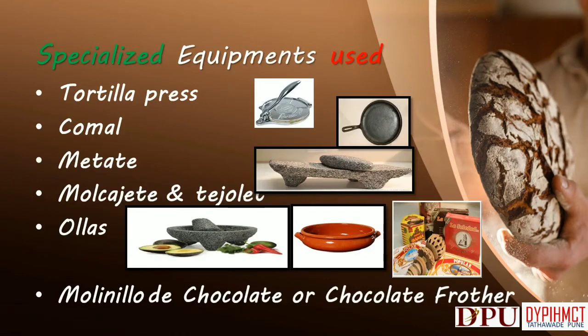Specialized Equipment Used in Mexican Cuisine: 1. Tortilla Press — traditionally tortillas are made by hand, but this is a dying art today. 2. Comal — this is used in roasting the tortillas. 3. Metate — grinding stones used for grinding corn. 4. Molcajete and tejolote — used in making mole poblano. 5. Ollas — clay pots traditionally used for cooking stews and sauces. 6. Molinillo de chocolate, or chocolate frother — a hand-carved wooden tool used for frothing Mexican chocolate drink and other beverages.